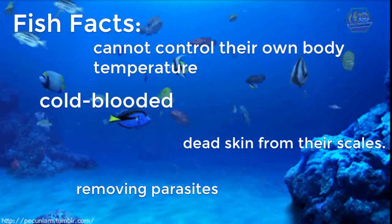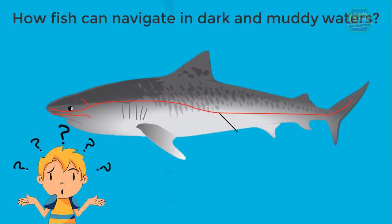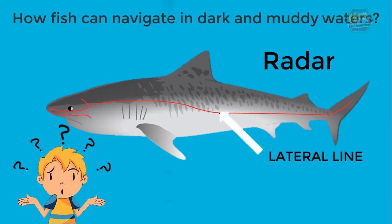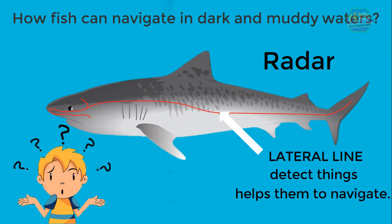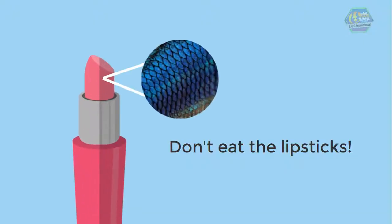Have you ever wondered how fish can navigate in dark and muddy waters? Fish have a special organ called the lateral line, which is similar to a radar — it detects things around them and helps them navigate. And lastly, did you know that many brands of lipstick on the market contain fish scales? But don't eat the lipstick, though!